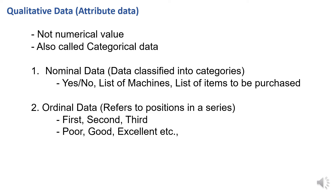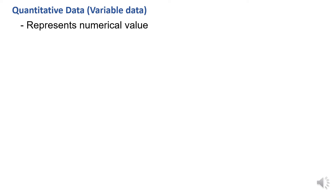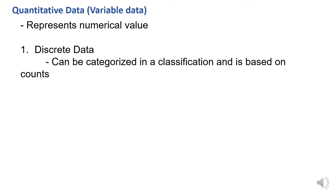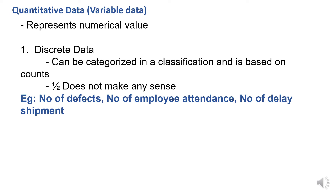Now we have two types of quantitative data. Quantitative data has a numerical value. The first type is discrete data. Examples of discrete data include: number of defects, number of employee attendances, number of delayed shipments. A fraction does not make sense here. For example, the number of people present in a hall is 1000 — saying 1000.5 or 1000.2 has no meaning. That is discrete data.